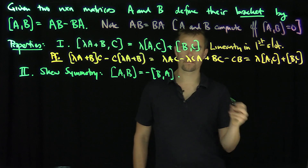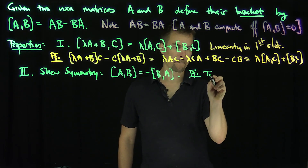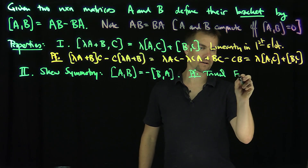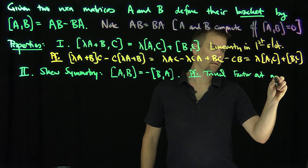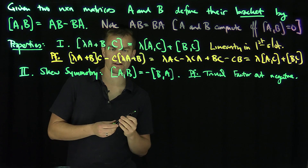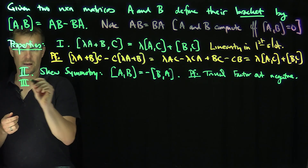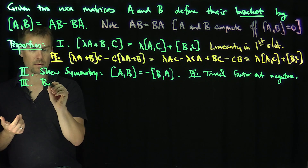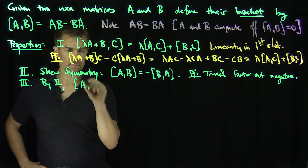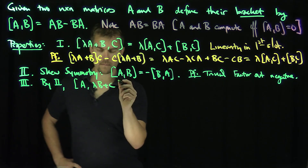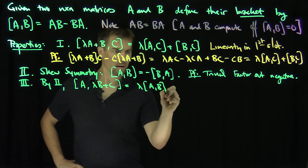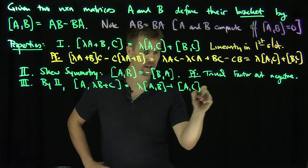The proof of skew symmetry is trivial — just take the definition and factor out a negative sign. And by skew symmetry, we automatically get linearity in the second slot as well: the bracket of A with (lambda B + C) gives lambda [A,B] plus [A,C]. So you're linear in the second slot.